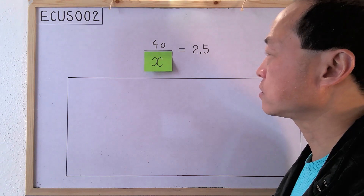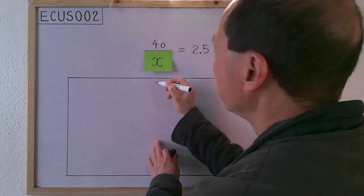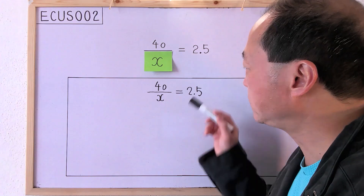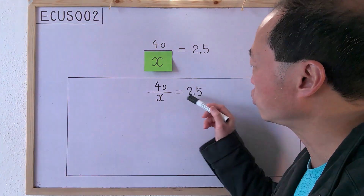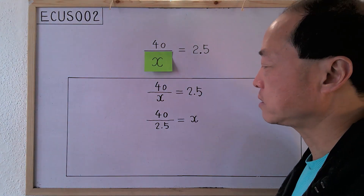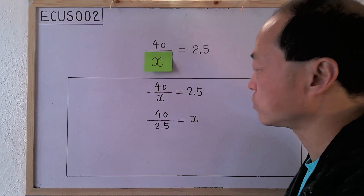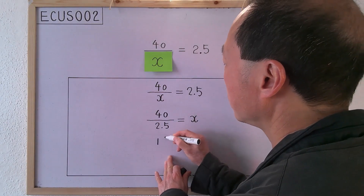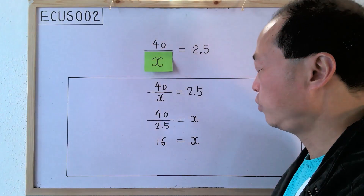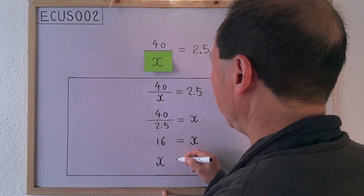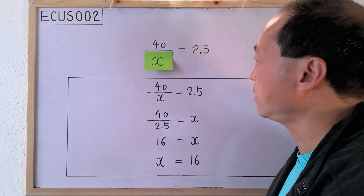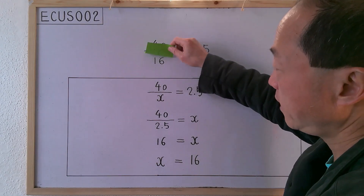Let's solve the equation. First, we copy the equation to solve. Then, by observation, we know that these two numbers form a multiplication pair, so we can exchange the two numbers. Using a calculator, 40 divided by 2.5 is 16. Lastly, we write x equals 16. Let's see if the number behind x is really 16. Yes, it is.